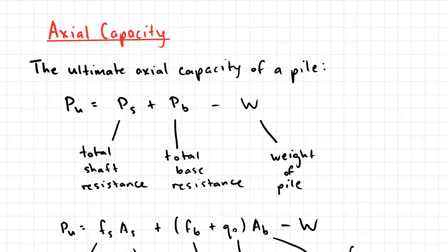The ultimate axial capacity of a pile is defined as the sum of the total shaft resistance, the total base resistance, subtracting the weight of the pile itself.